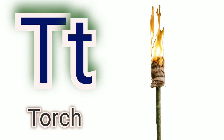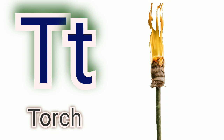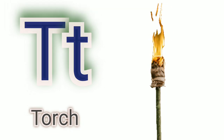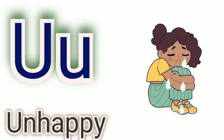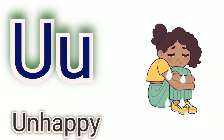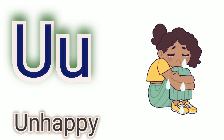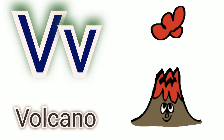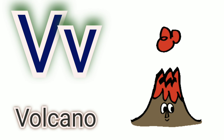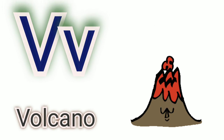T. T for Dodge. U. U for Unhappy. V for Volcano.